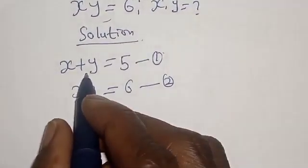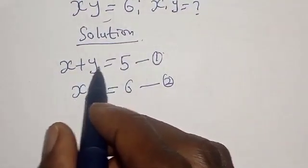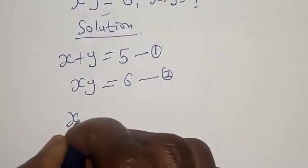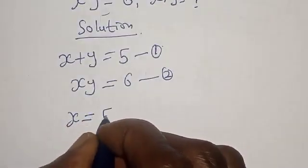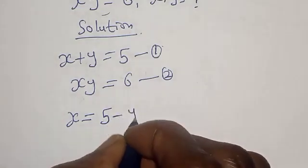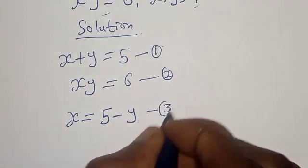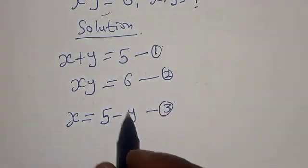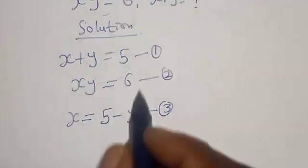Now from equation 1, let's make s the subject of formula. We have s is equal to 5 minus y. Let's call this equation 3. Now let's substitute equation 3 into equation 2.